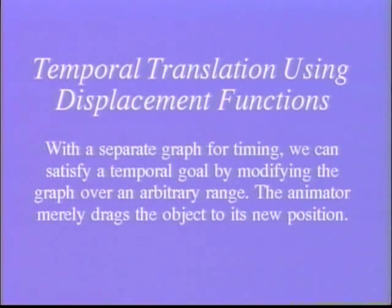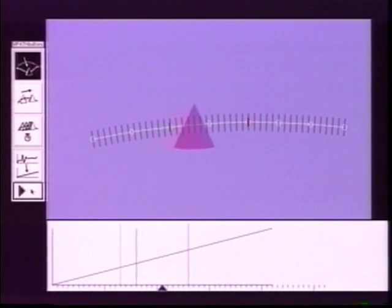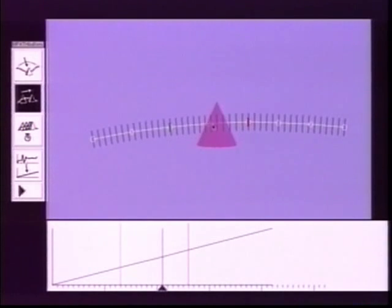By using a separate graph for the timing, shown below, we can satisfy such temporal goals by modifying the graph over an arbitrary range using displacement functions.